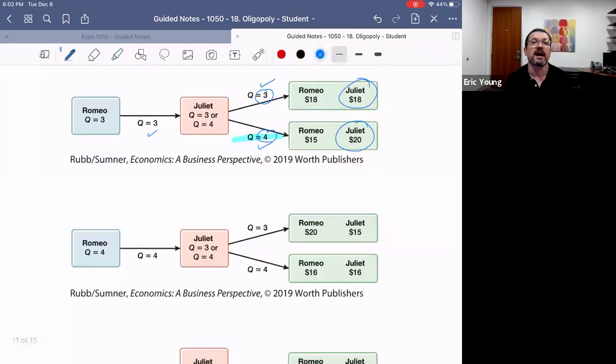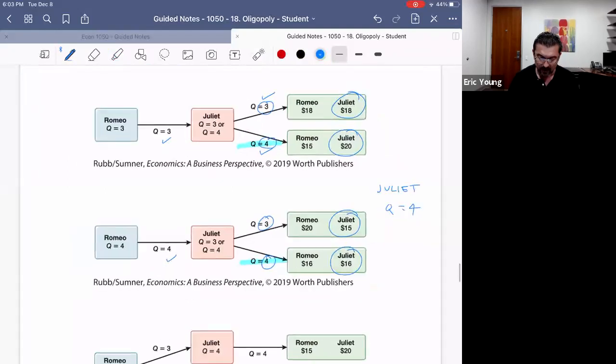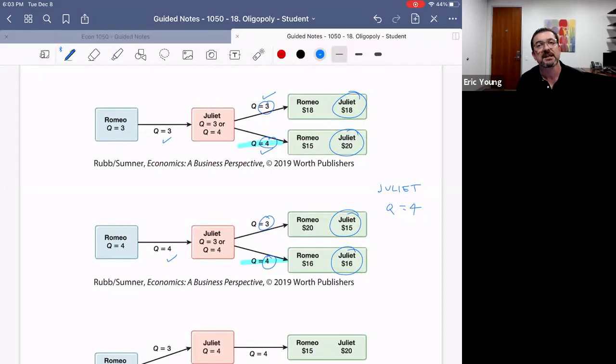Juliet could also analyze the branch of the tree where Romeo makes four. Juliet would say, 'If I make three, I'll earn fifteen dollars, and if I make four, I'll earn sixteen dollars.' Since sixteen is better than fifteen, Juliet would say, 'Here I'm going to make four.' Notice that on the decision tree, we've arrived again at a dominant strategy, and that dominant strategy is Juliet will produce four.